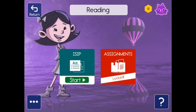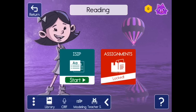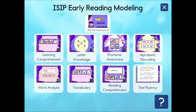Click Start under Reading. You will soon take your ISIP assessment, but first click on the box with the three dots. After that, you will want to click right here where it says ISIP Modeling. These are the types of activities that your child will see.